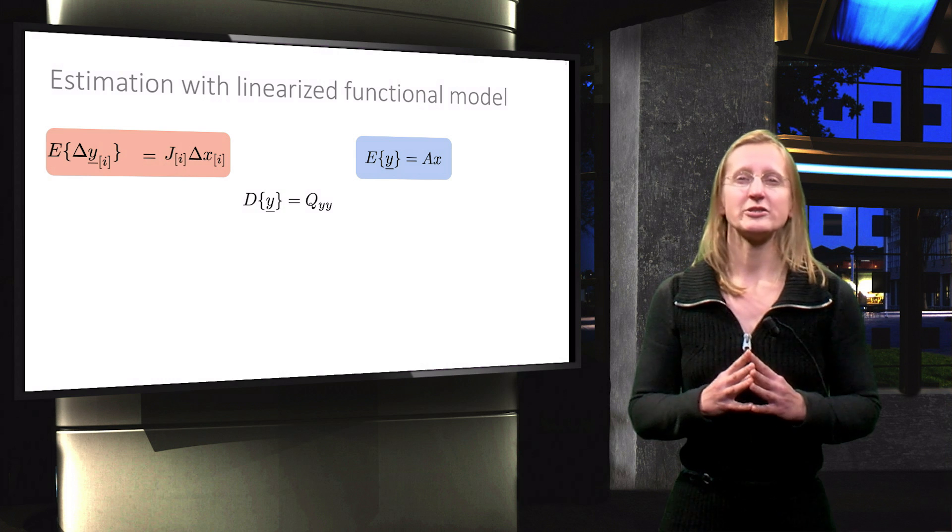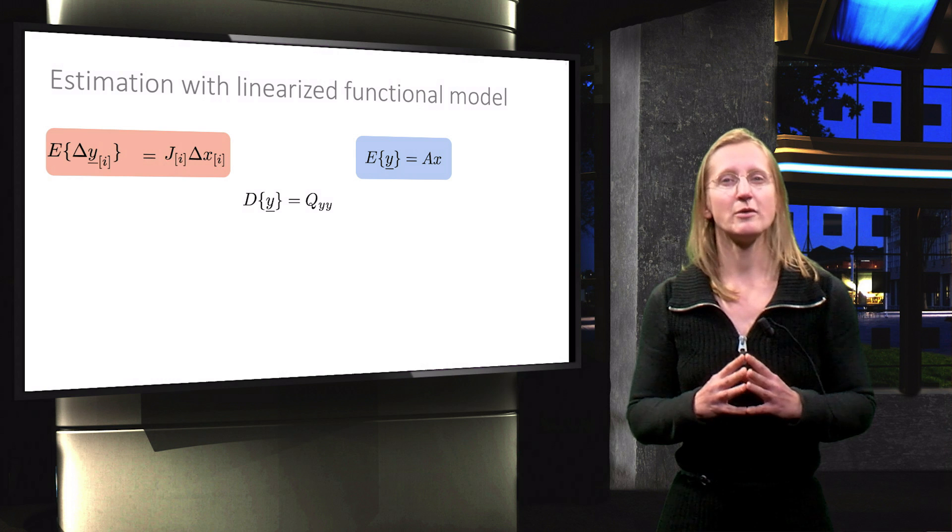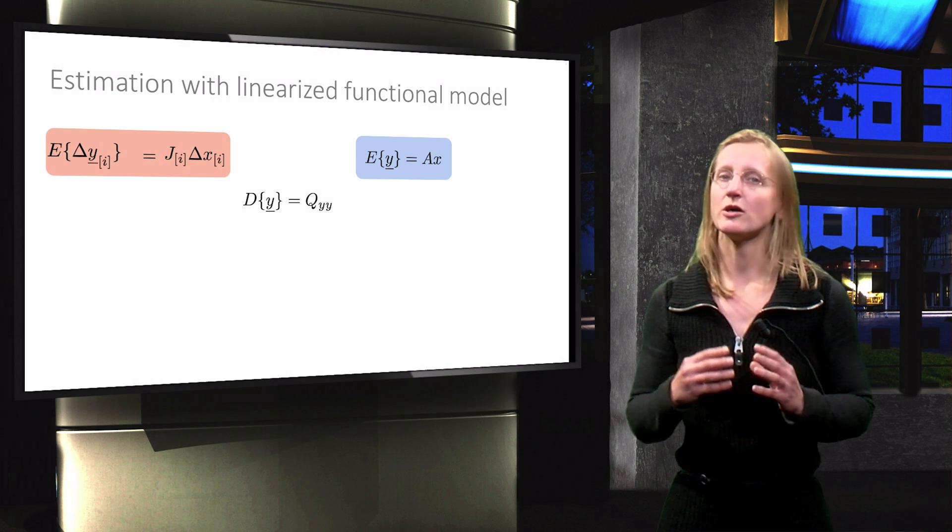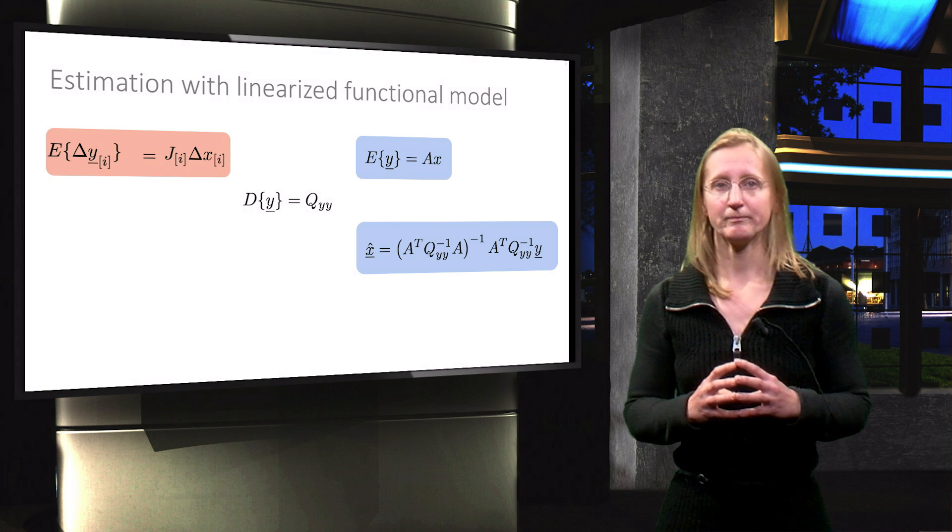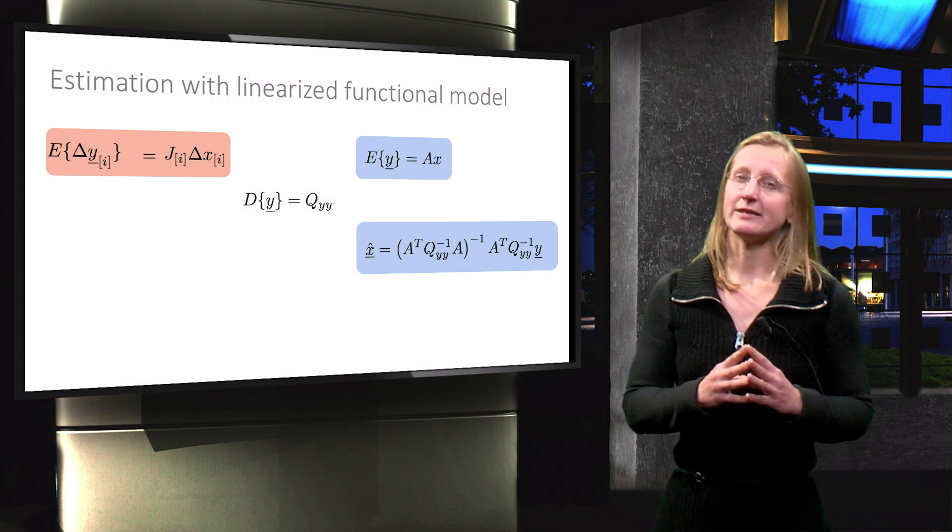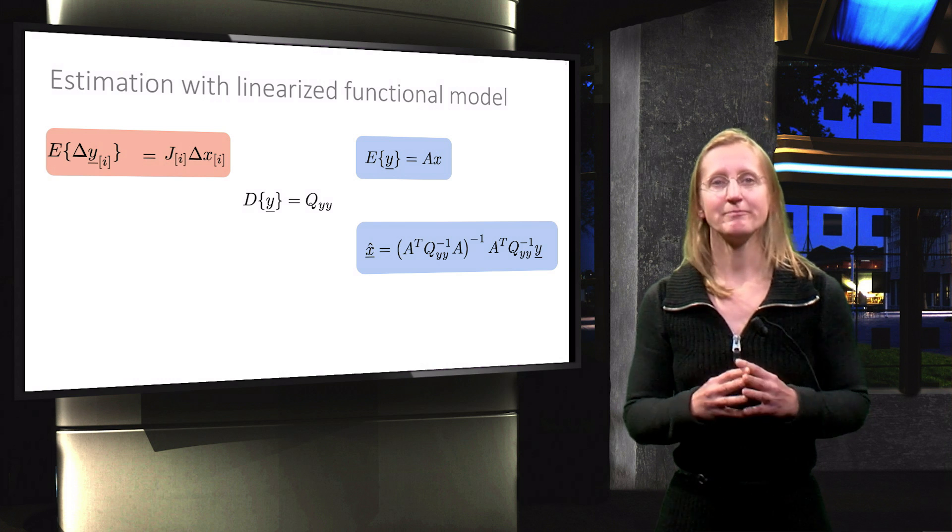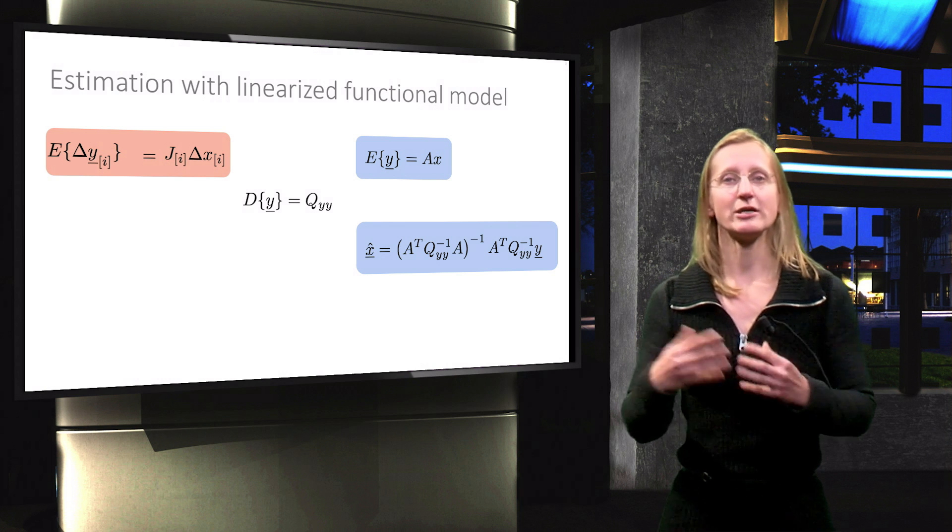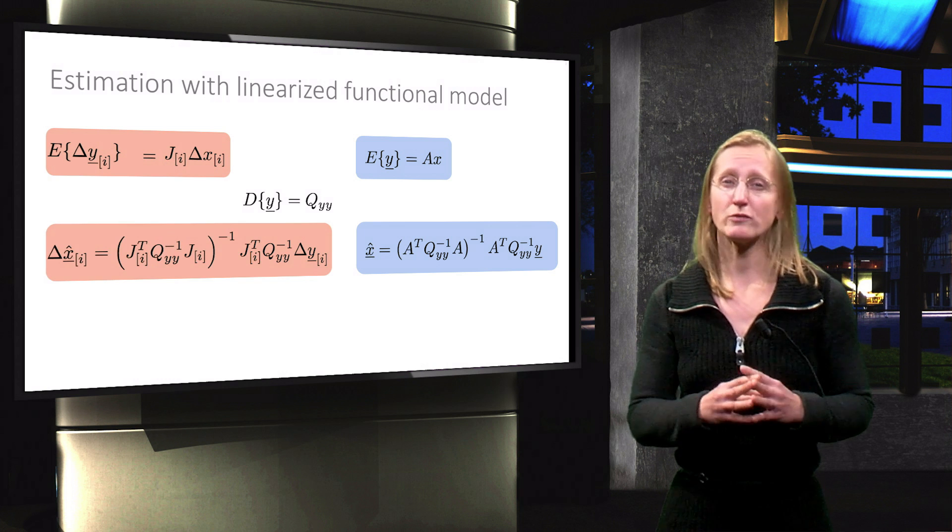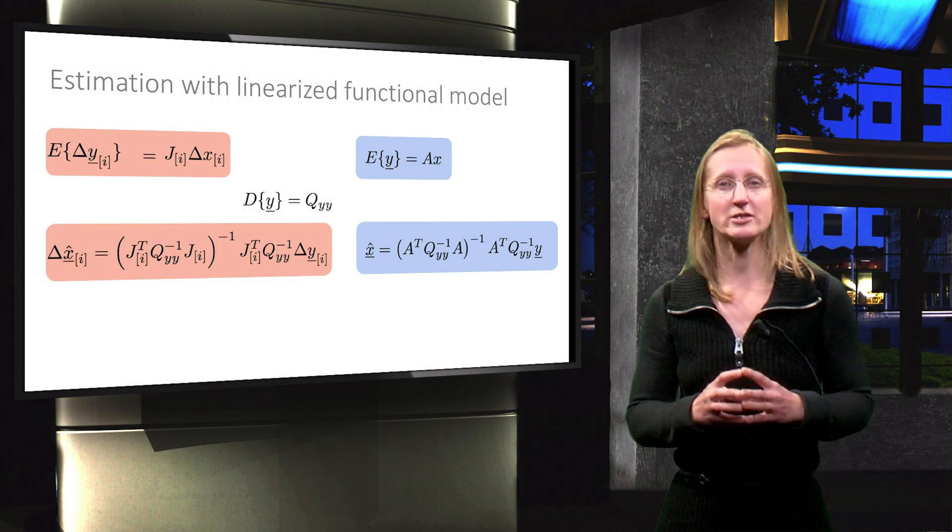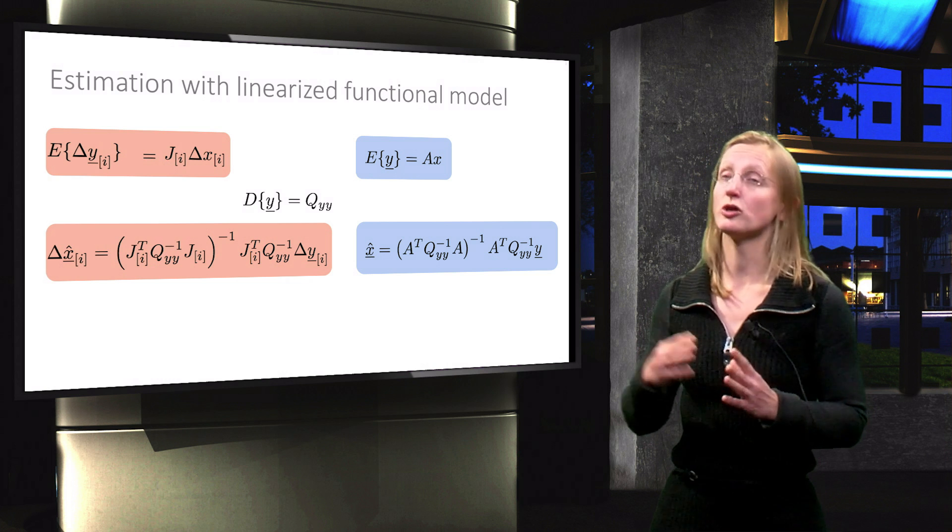For the default linear model, the best linear unbiased estimator was shown to be the optimal estimator of x. Replacing the A matrix here with J and x and y by the delta equivalents, the corresponding estimator of delta x thus becomes equal to the equation shown here.